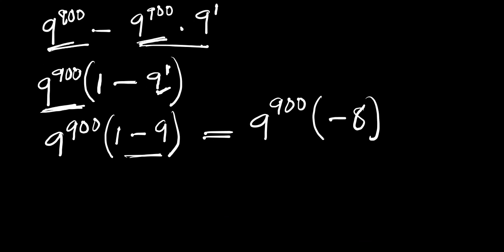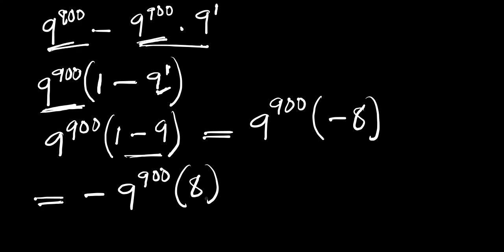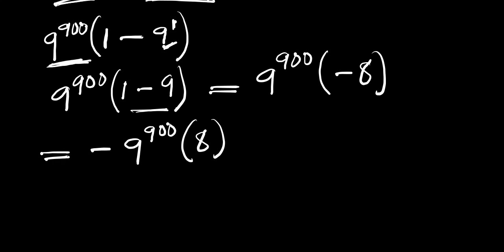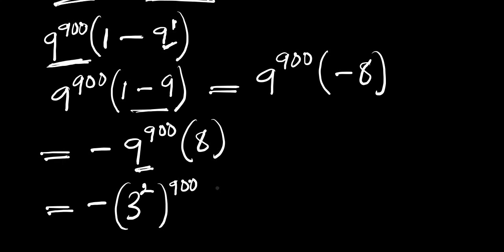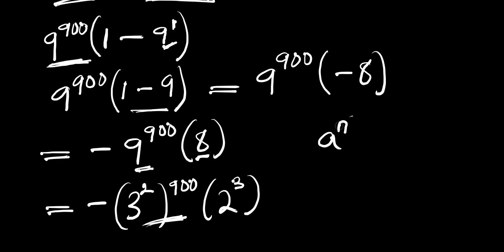Multiplying this out and taking out the negative sign, we have minus 9 to the power of 900 times 8. Since 9 is a perfect square, we can rewrite it as 3 squared, so 9 to the power of 900 becomes (3 squared) to the power of 900. We also rewrite 8 as 2 to the power of 3. Applying the power-of-a-power identity — a to the power of n, all to the power of m, equals a to the power of n times m — we multiply the exponents.